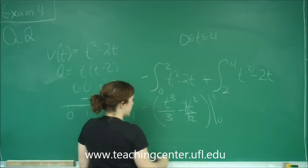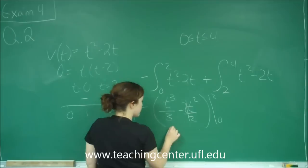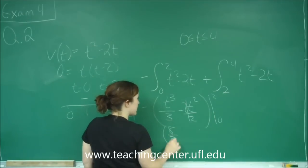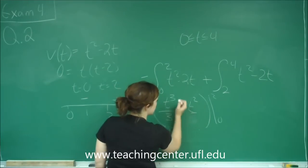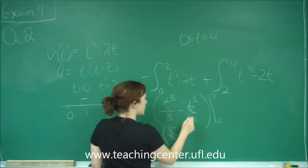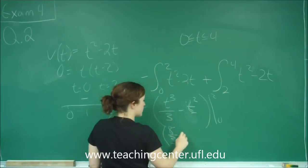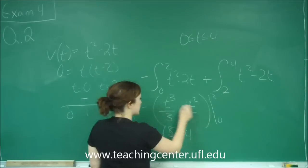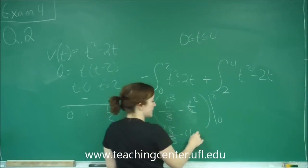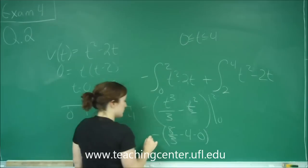So when I plug in 2, I get 2 cubed, which is 8 over 3, so that's 8 thirds. And remember, this is just t squared. 2 squared is 4, so minus 4. And when I plug in 0, I get 0 minus 0, so minus 0 there, multiplying that by negative.